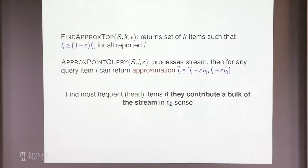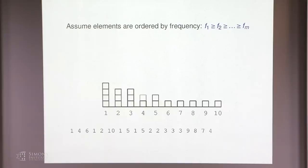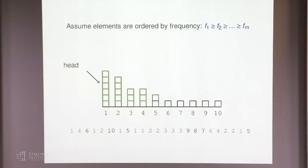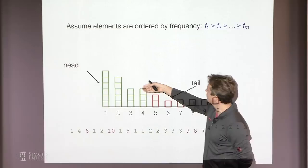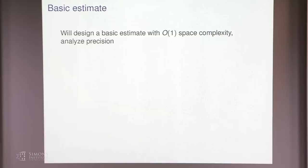We'll obtain a space-efficient algorithm that finds the most frequent items, the head of the signal, assuming that these frequent items contribute the bulk of the stream in L2 sense. The top k elements are called the head of the signal and the rest the tail. Quite interestingly, this is exactly what we need to design spectral sparsification algorithms for graphs.